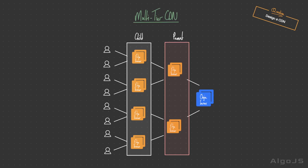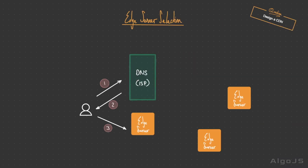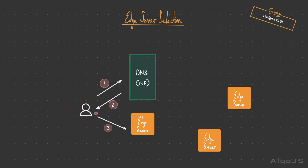Now, how do we ensure the client effectively finds the nearest edge server? This is where DNS resolution comes in. The authoritative DNS server analyzes the geographical information from the client's IP address and intelligently chooses the geographically closest edge server. However, this only provides a straightforward mapping of domain names to IP addresses without considering dynamic factors like real-time server load, and clients commonly cache DNS results, so if an edge node gets a new IP address, clients may still send requests to the old one.